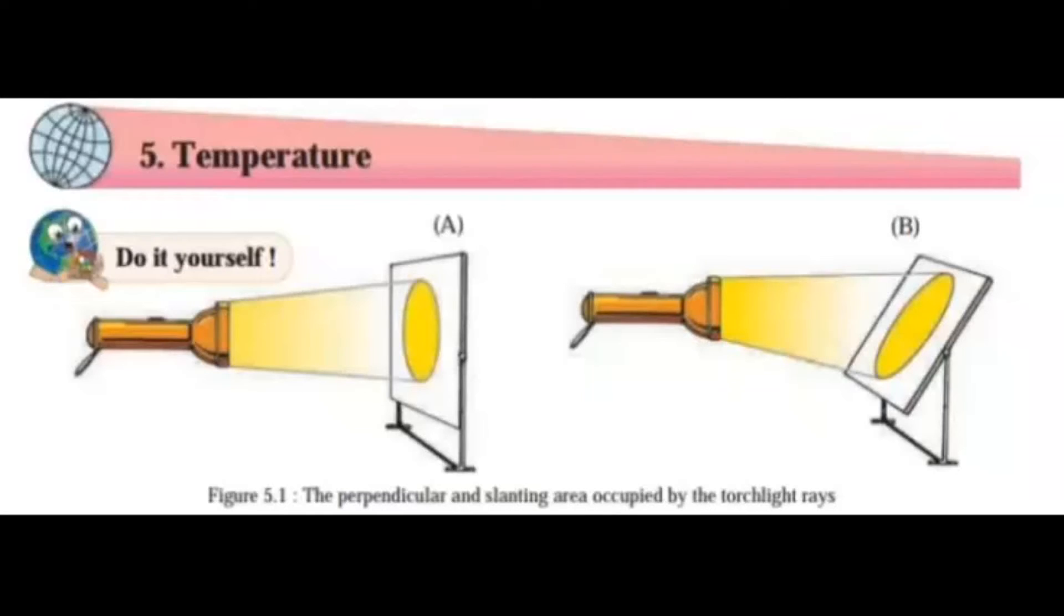Do it yourself. Take a torch light and keep it stable at one place. Take two large paper sheets large enough to accommodate its entire beam. Paste the papers on two flat boards. Hold the board perpendicular to the beam. See figure 5.1a. Draw the outline of the area lit up by the beam. Name the paper A.